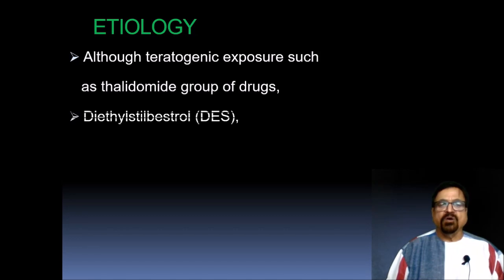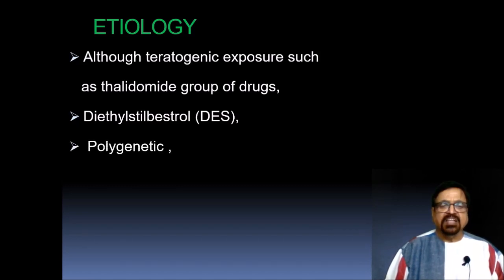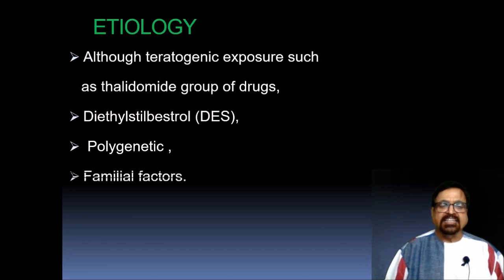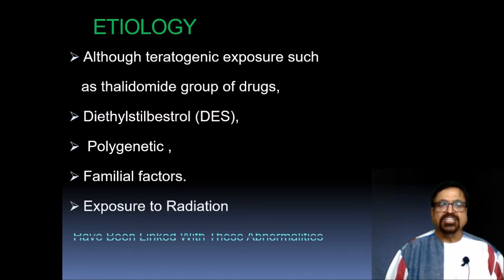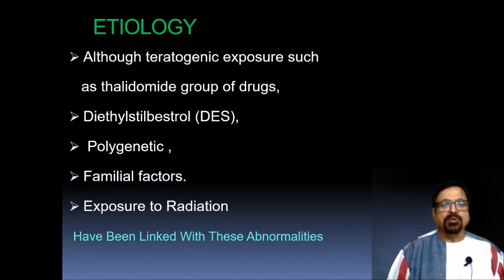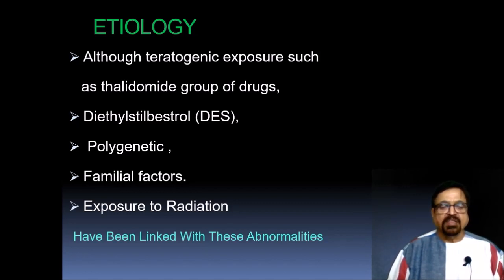Regarding the etiology of Mullerian duct anomalies, teratogenic exposures such as the Thalidomide group of drugs are blamed, as is diethylstilbestrol, popularly called DES. Other factors include polygenetic and familial (hereditary) influences. Exposure to radiation is also a factor, though not as significant in the present era since due precautions are taken not to expose anyone unnecessarily — and definitely not to expose pregnant patients. All these factors are linked with the anomalies.